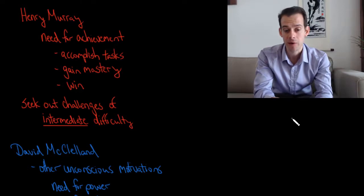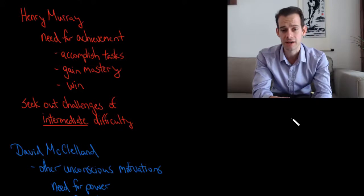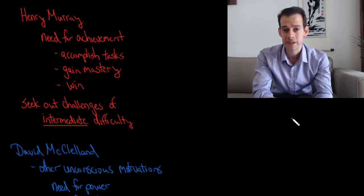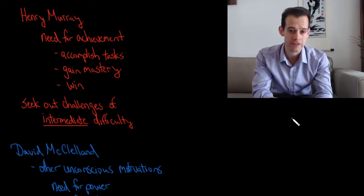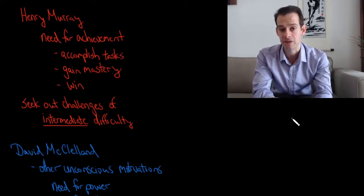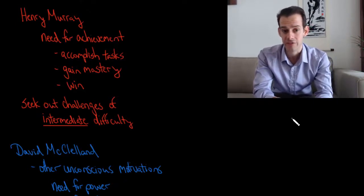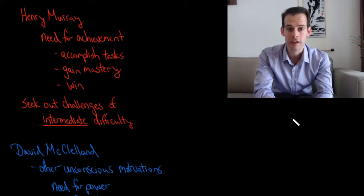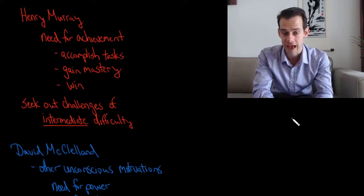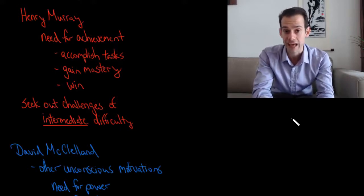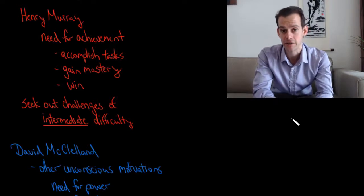Murray suggested that people with a high need for achievement would seek out challenges of intermediate difficulty. The idea is that they wouldn't seek out things that were too easy because that wouldn't bring them a sense of accomplishment or achievement. And they would also avoid things that were going to be too difficult, things that might be too challenging, because if there's a chance that they won't win or that they won't be able to master these tasks, that this won't satisfy this unconscious need for achievement.